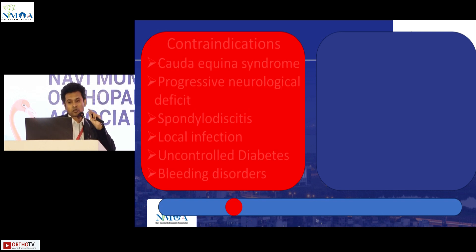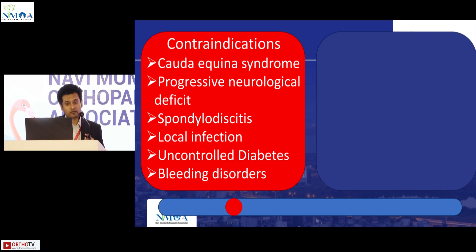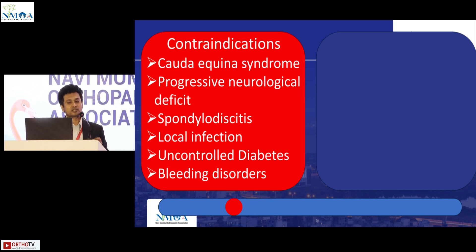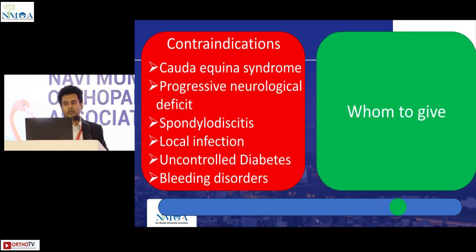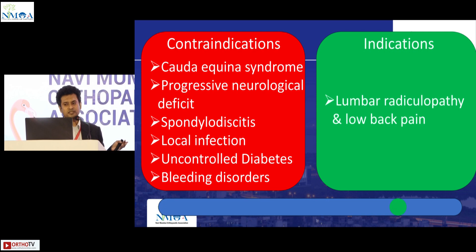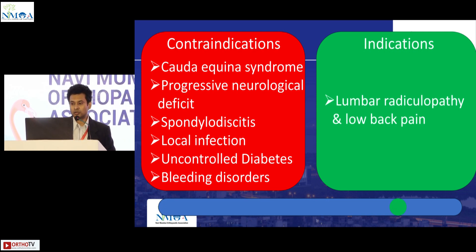Before knowing what to do, we should know what not to do. Contraindications include cauda equina syndrome, progressive neurological deficit, infection such as spondylodiscitis or local injection site infection, uncontrolled diabetes, and established bleeding disorders. If none of these are present, we can proceed with injections in patients with low back pain and radicular pain.